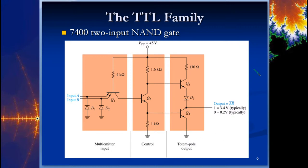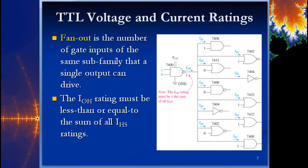If Q3 is off and Q4 is on, whatever is connected to the output will sink current back through, because when Q4 is turned on there is a short between the collector and emitter, giving that current a path to ground — so it actually sinks back into the chip itself.